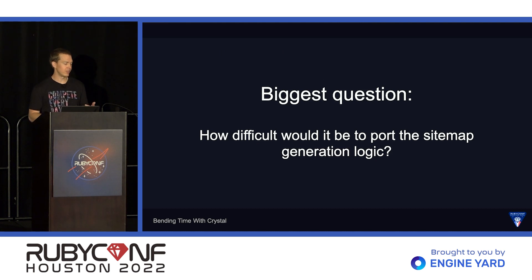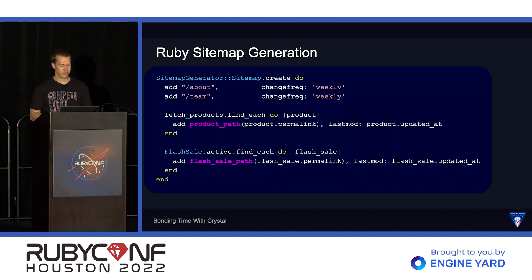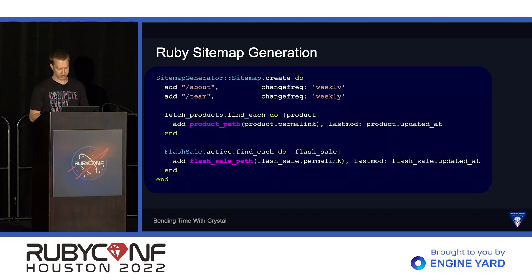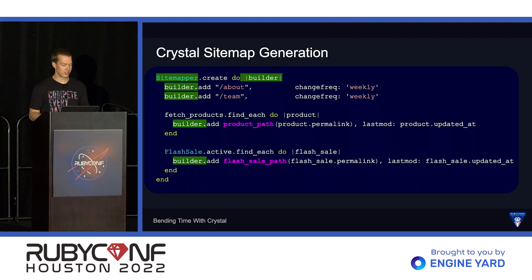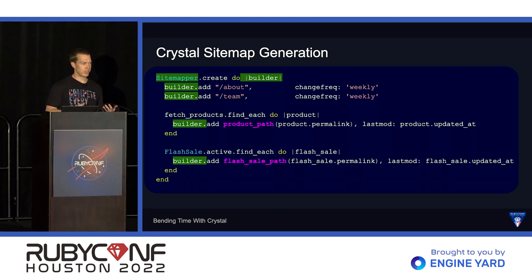So the biggest question becomes how difficult would it be to port this over to Crystal — specifically the sitemap generation logic. Here's a reminder of what the sitemap generation code looks like in Ruby: that big block with the most important method being add. Well, this is what it would look like in Crystal. The green highlights are the diff between Ruby and Crystal. We have to change the constant because we're using a different library with a different name. We add a block variable we'll call builder. And now that add method is a method on the builder object and not a global method. But that's it.